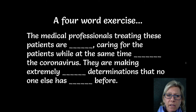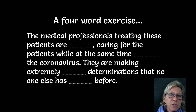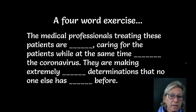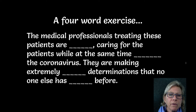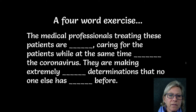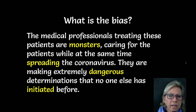I have a four-word exercise here to show you how four words out of these 33 words, if you change them, can completely change the meaning and the bias in a paragraph. 'The medical professionals treating these patients are blank, caring for the patients while at the same time blank the coronavirus. They are making extremely blank determinations that no one else has blank before.' What if we change those blanks to these words? This is a terrible thing — these people are terrible.